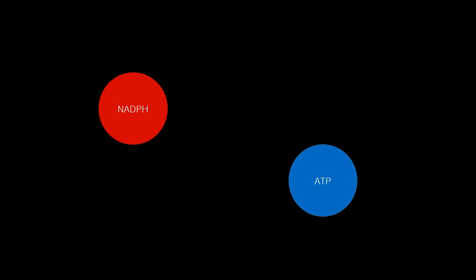NADPH and ATP can now be used for many different processes throughout the cell. These processes allow all plants to live.